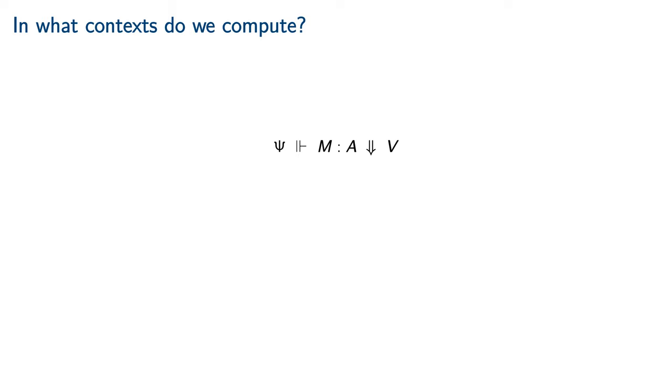Canonicity and normalization are two points within a spectrum of computational results for type theories. Type theoretic notions of computation vary in a few important parameters. Which elements are we computing? What observations are we making about them? And in what contexts are we doing so?